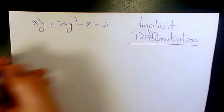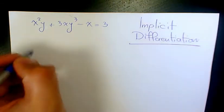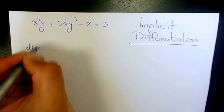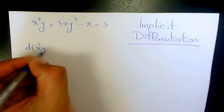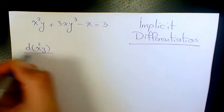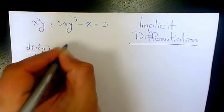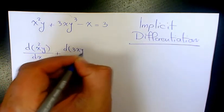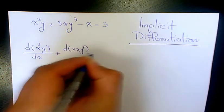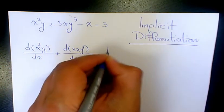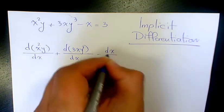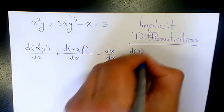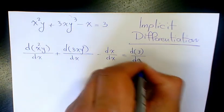So I need to use implicit differentiation. That means the derivative of x squared y with respect to x, plus the derivative of 3xy cubed with respect to x, minus the derivative of x with respect to x, equals the derivative of 3 with respect to x.